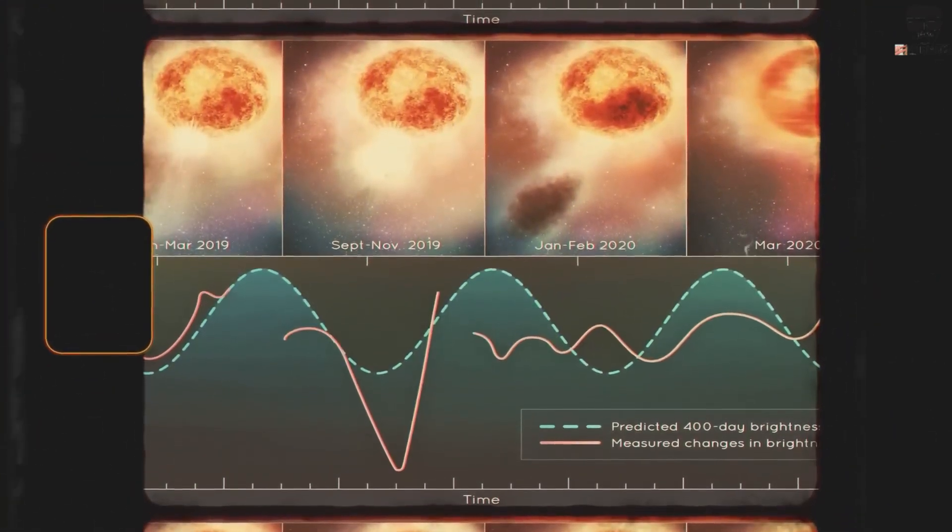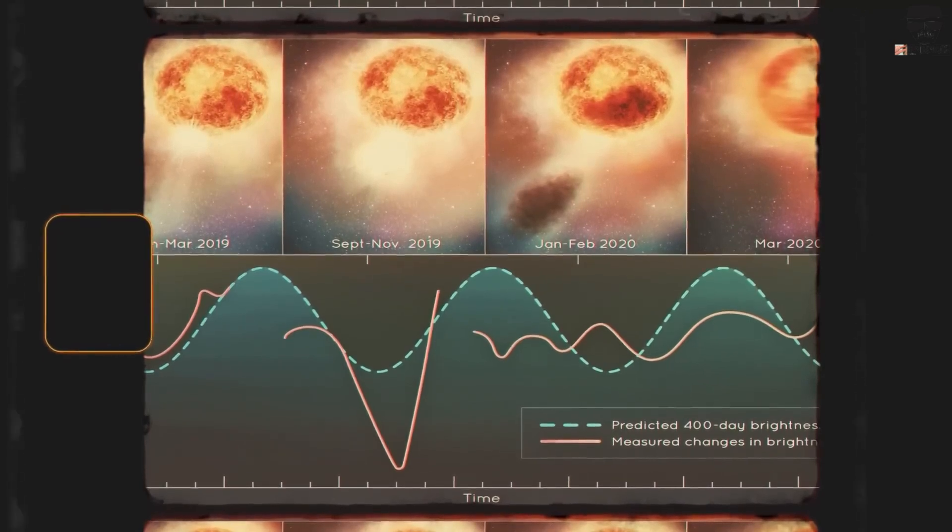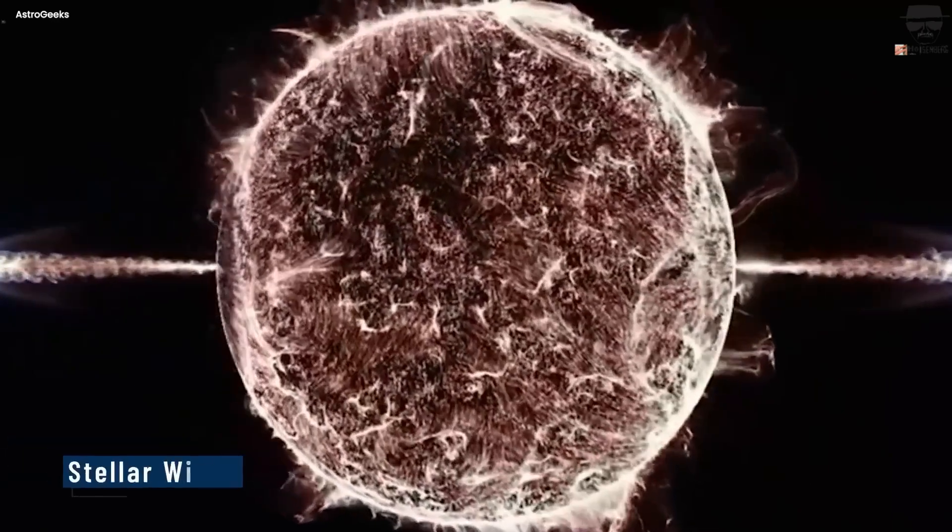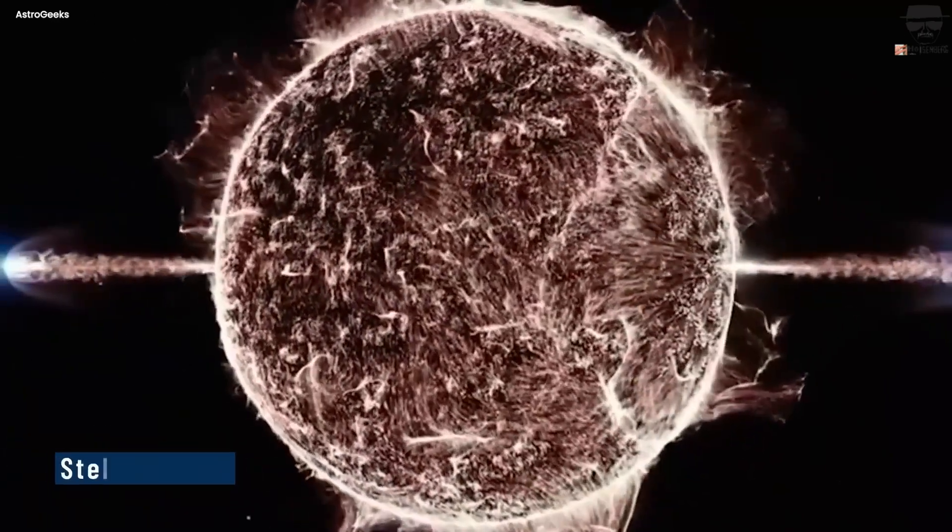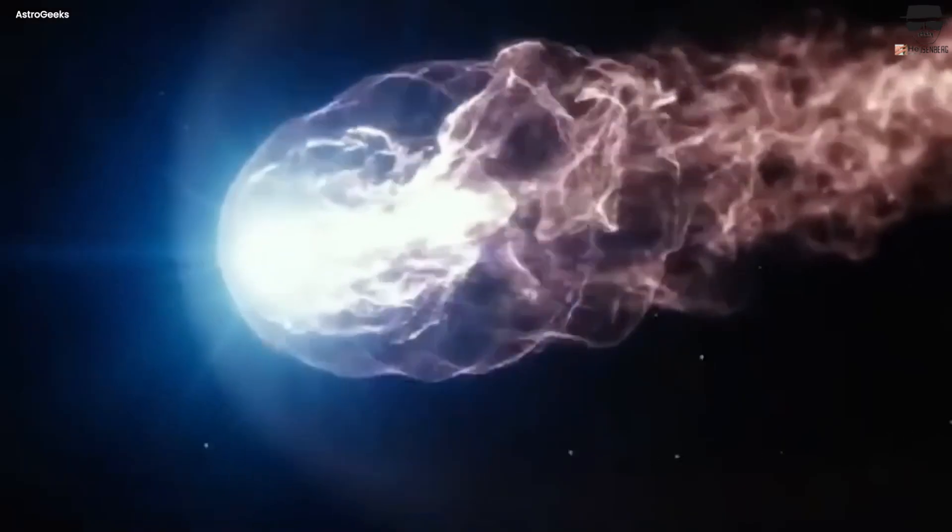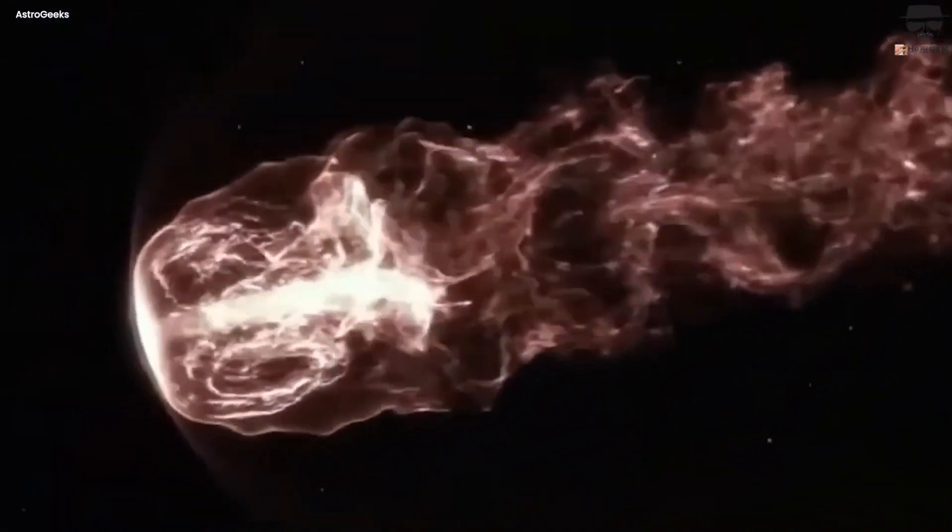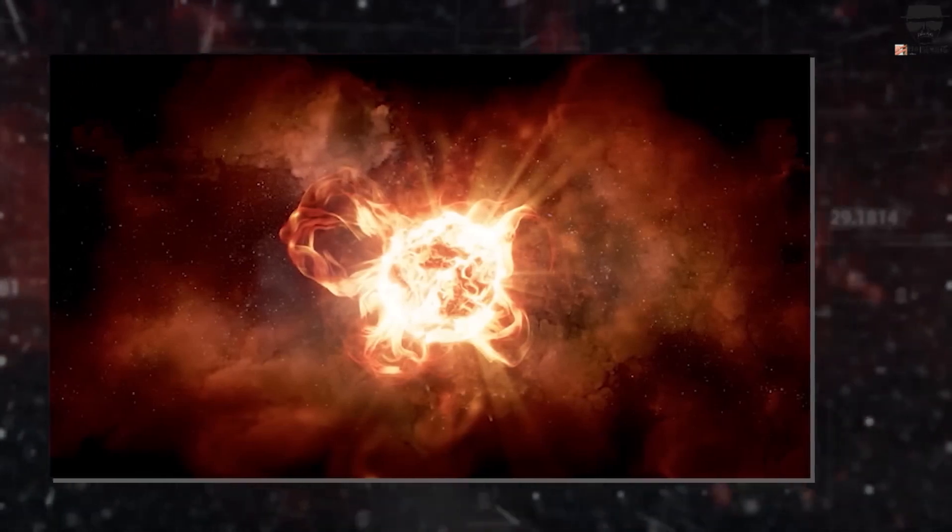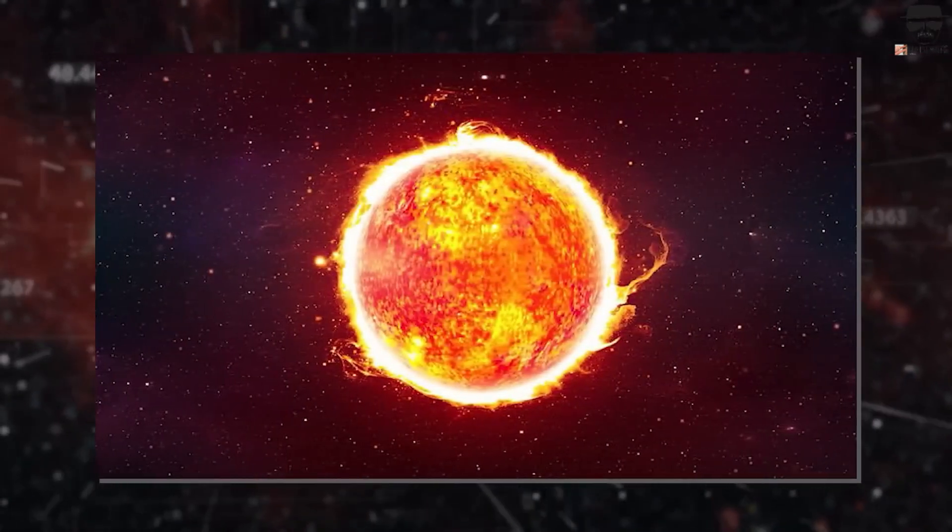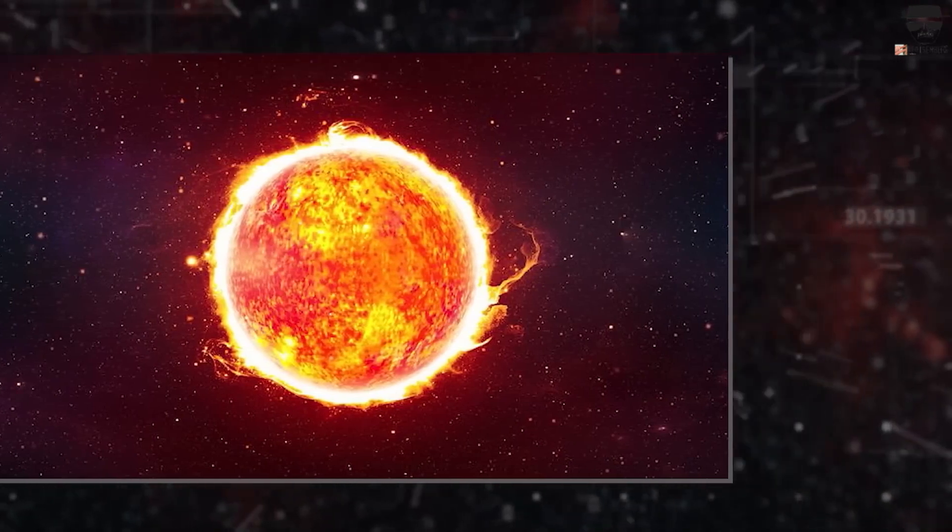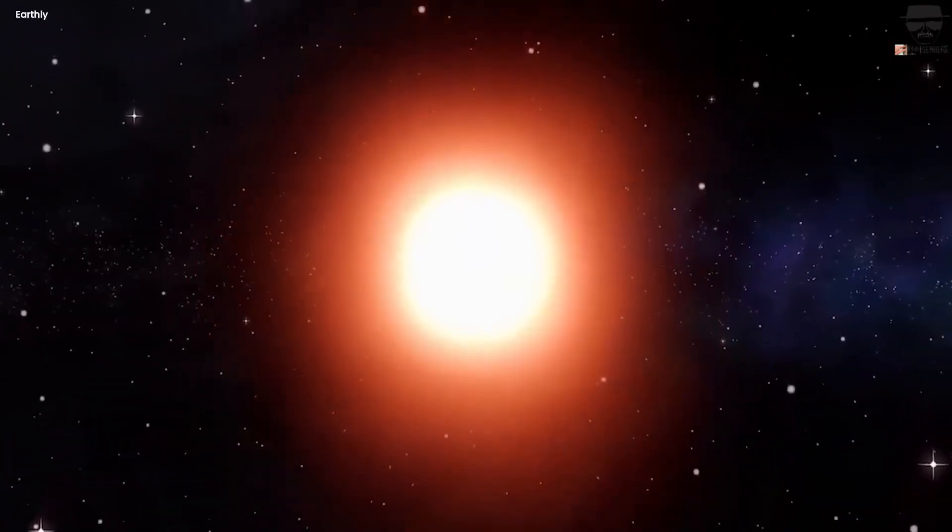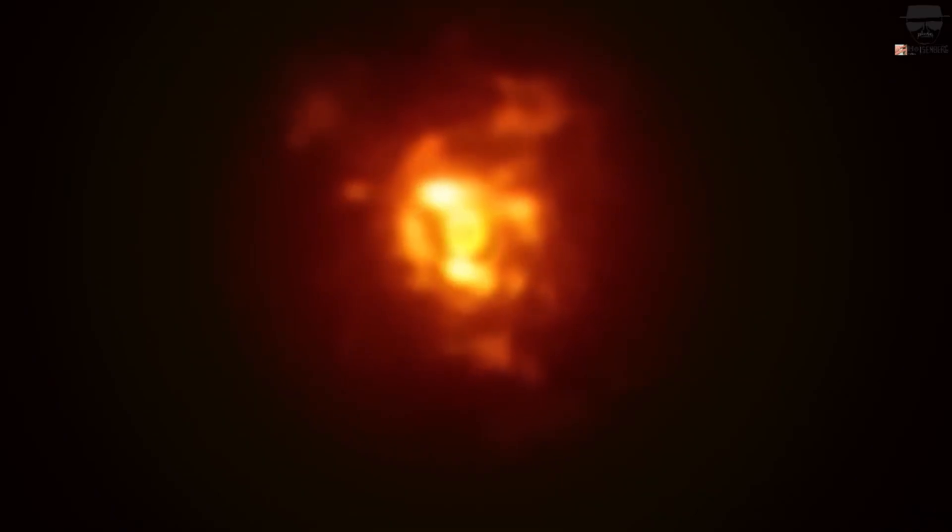But will the blast from Betelgeuse reach Earth? If so, what will happen? Even though the event would be a stunning astronomical show, it is important to know what could happen if a supernova happened close. Supernovae are very powerful events that release huge amounts of energy. As it moves through space though, the energy quickly fades away. The energy from Betelgeuse's supernova will have been greatly reduced by the time it gets to Earth. Scientists think that even a supernova that happened within 25 light-years of Earth would not directly harm it. Gamma rays are one type of energy that supernovae give off.